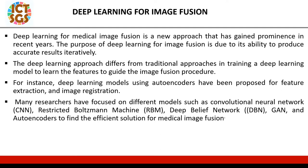Deep learning for medical image fusion is a new approach that has gained prominence in recent years. The purpose of using deep learning for image fusion is due to its ability to produce accurate results continuously. Deep learning differs from traditional approaches in that it trains a model to learn features and guide the image fusion procedure. For instance, deep learning models using autoencoders have been proposed for feature extraction and image registration, performing both functions together. Many researchers have focused on different models such as CNN, restricted Boltzmann machine, deep belief network, GAN, and autoencoders to find efficient solutions for medical image fusion.